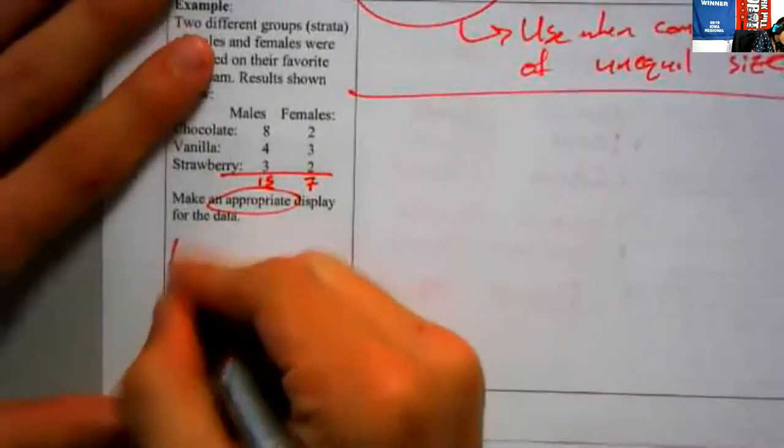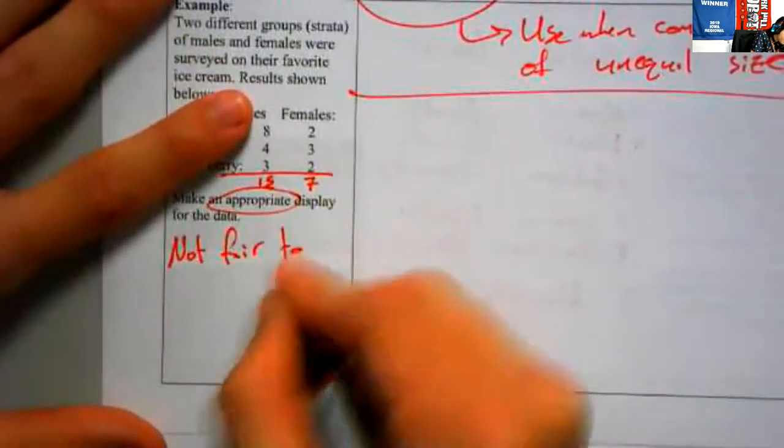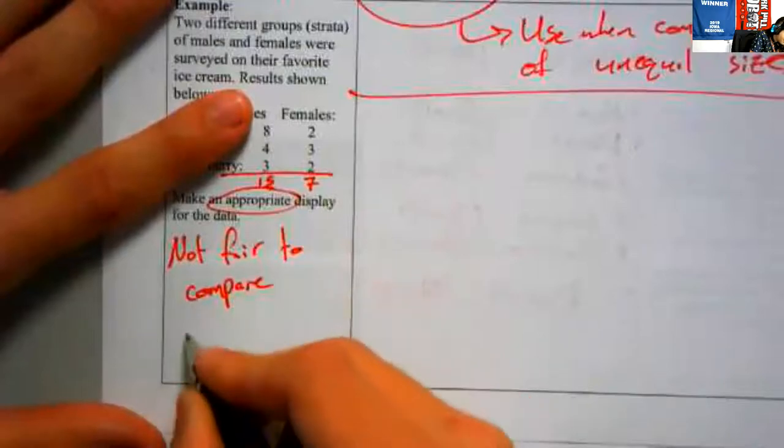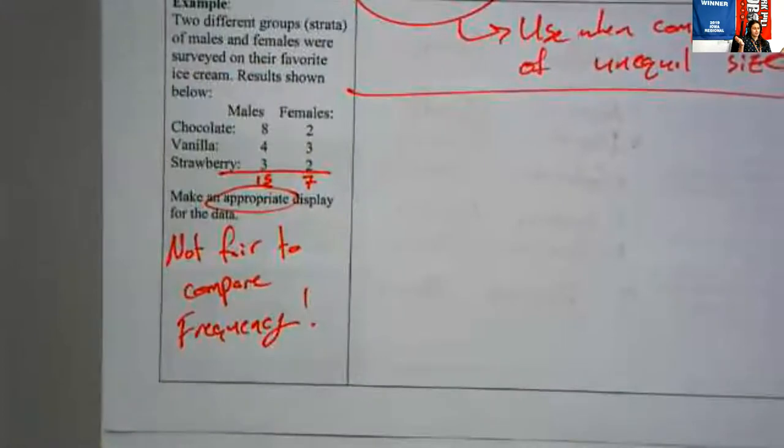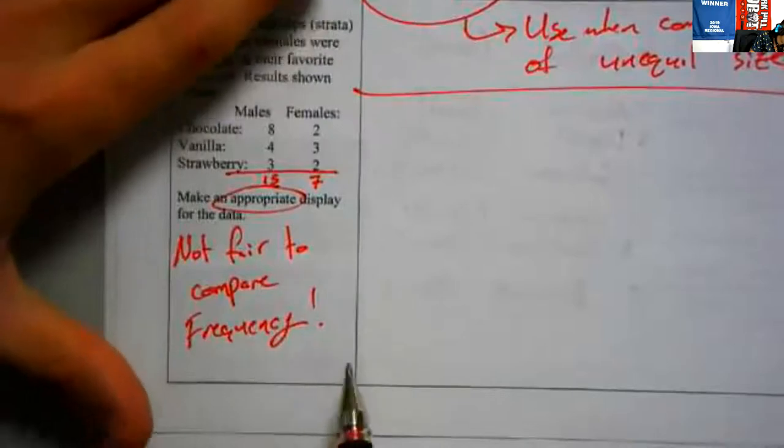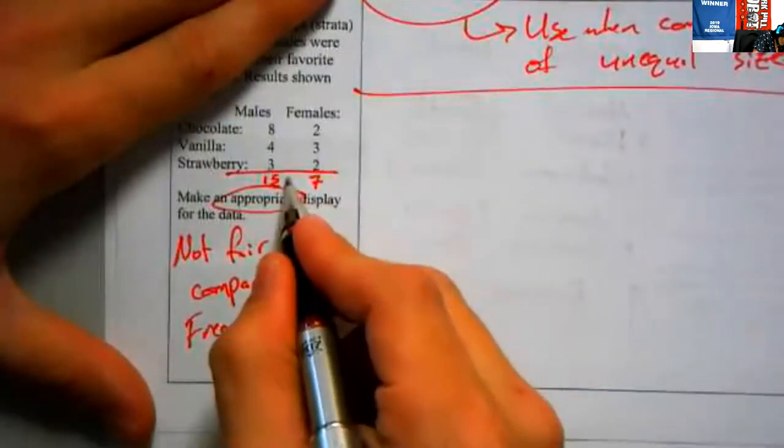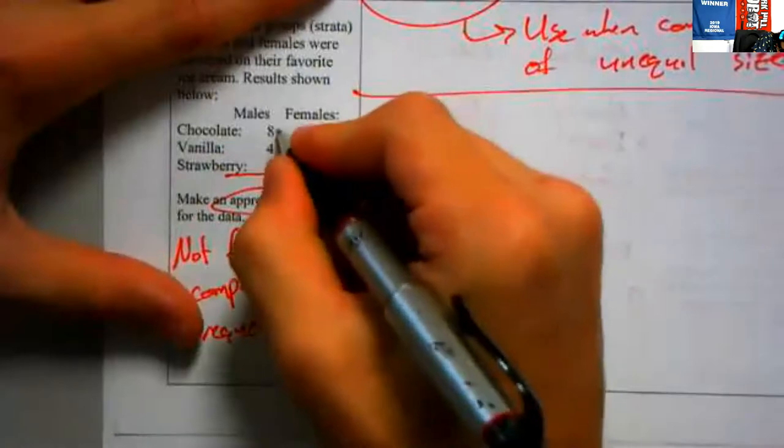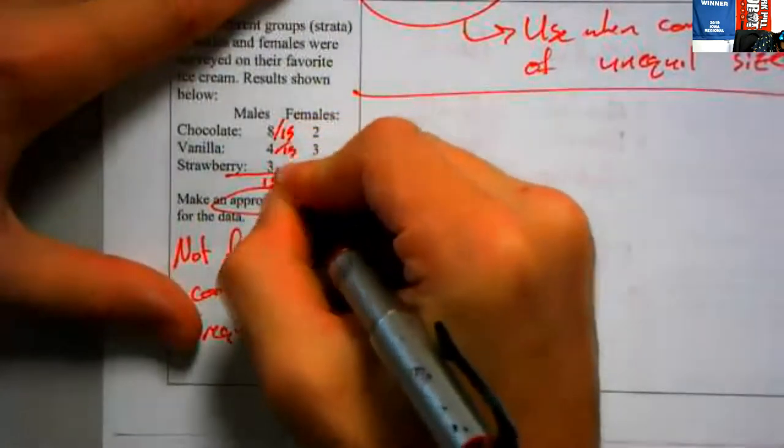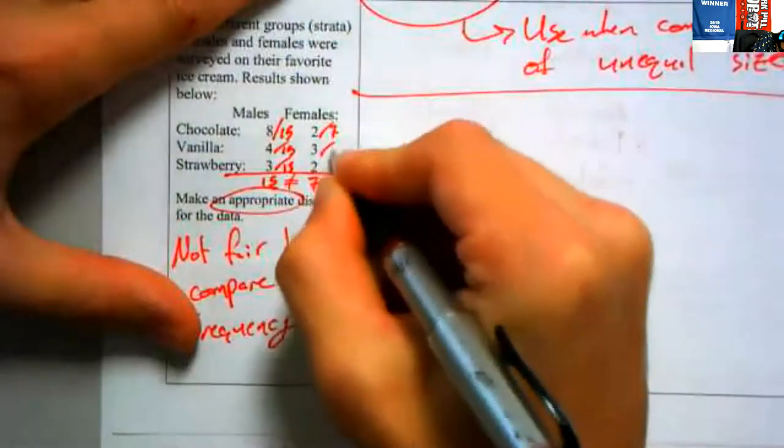So it's not going to be fair to compare frequency. Why is it not fair to compare frequency? Because we talked to more than twice as many males. What is this graph going to show? The males have a higher chocolate bar, vanilla bar and strawberry bar. Does that tell me anything? No. All the bars are taller. Great. That doesn't make any sense. So it's not fair to compare frequency. Since the groups are of unequal size, we need to compare relative frequency. What proportion of males likes chocolate? So you're going to consider those out of 15, out of 15, and out of 15, and out of seven, and out of seven, and out of seven.